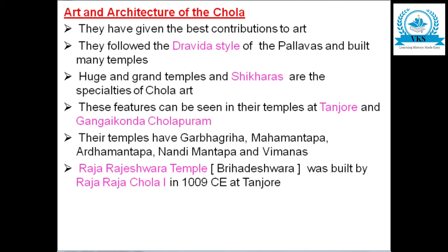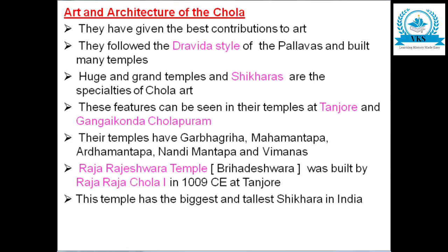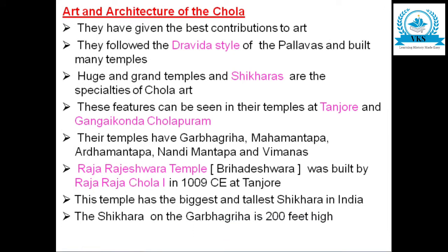The Raja Rajeshwara temple was built by Raja Raja Chola I in 1009 CE at Tanjore. This is one of the most important temples of the Chola period, also known as the Brihadeswara temple. This temple has the biggest and tallest Shikara in India — the Shikara on the Garbha Gruha is 200 feet high.